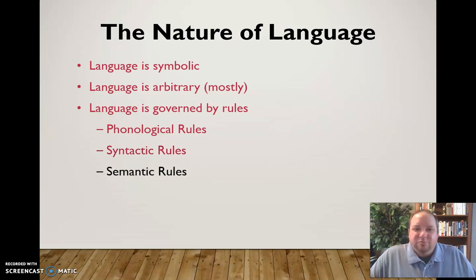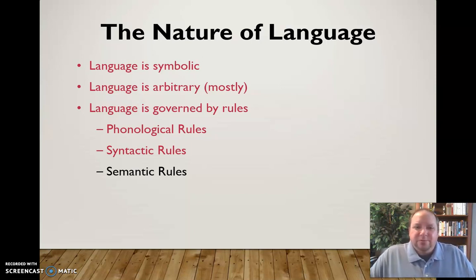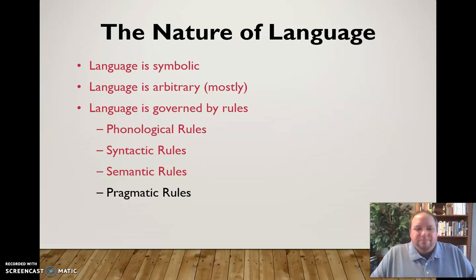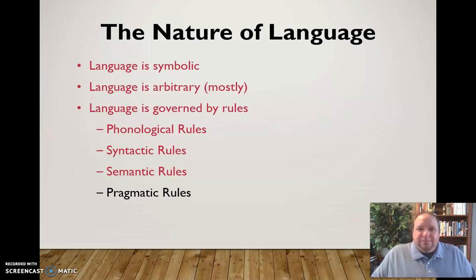We have semantic rules, which have to do with the use of language in context — how we know what word is appropriate to use in which situation, and the relational rules that surround those things. And finally we have pragmatic rules, which govern the practical, everyday use of language. Every language has all these different types of rules, though the specific rules differ across languages.